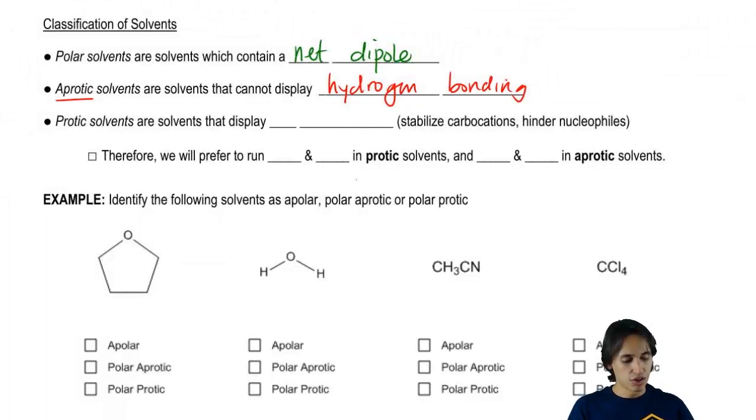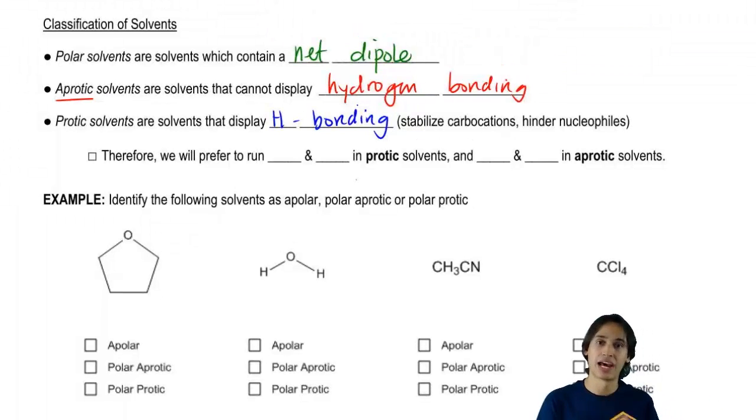And then that means that a protic solvent is going to be a solvent that displays H bonding. And that H bonding has a special property. It turns out that for different types of reactions it's going to have different effects. So when you're making carbocations, if you can hydrogen bond, that's actually going to stabilize the carbocation and make it easier to generate a carbocation for that step. So be thinking about that.